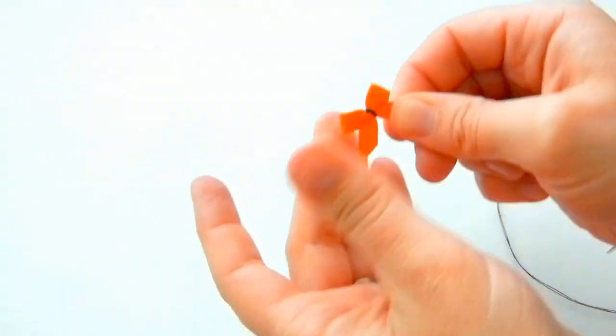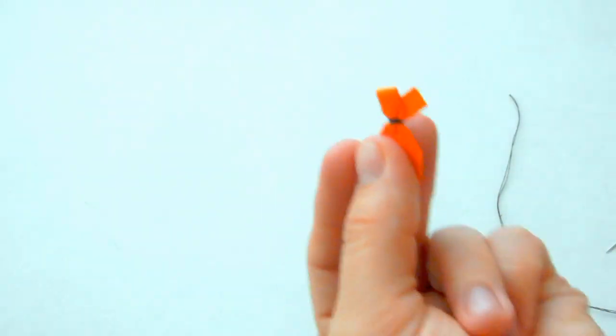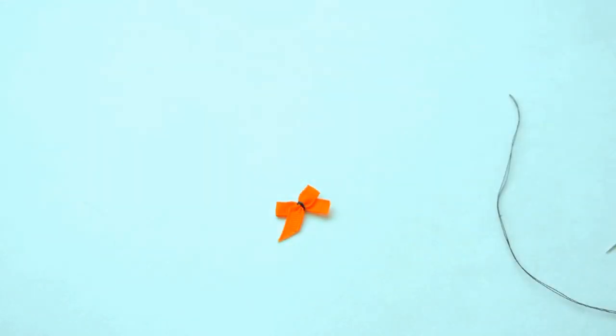If you use like an orange ribbon or orange thread, you're probably fine just to leave it like this. But I use black, and so I do have some eighth inch ribbon that I'm going to cover that black thread.